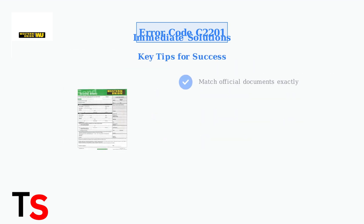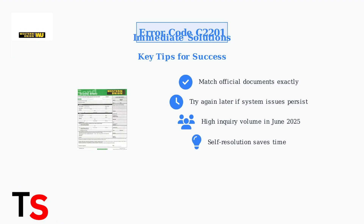Always ensure your information matches official documents exactly, as even small discrepancies can cause errors. If system issues persist, try again later, as they may be temporary. Keep in mind that Western Union is experiencing high inquiry volumes as of June 2025, so resolving the issue yourself can save significant time. These self-resolution steps are often faster than waiting for customer support. By following these immediate troubleshooting steps, you can often resolve Western Union Error Code C2201 quickly and continue with your money transfer. Remember to be thorough with information verification and patient with temporary system issues.